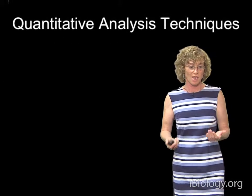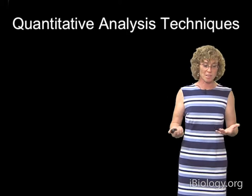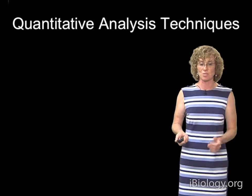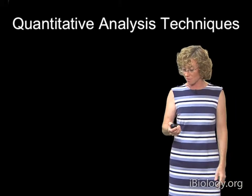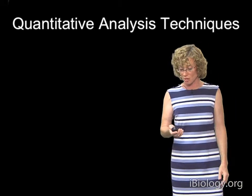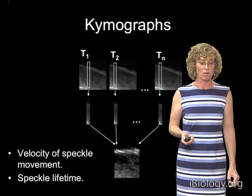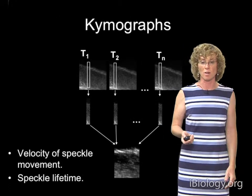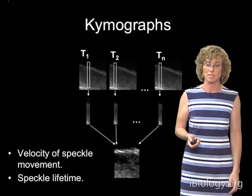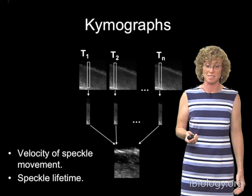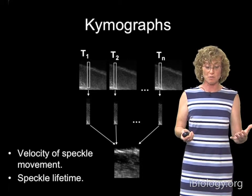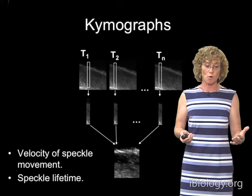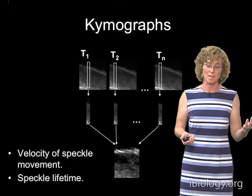You get these millions and millions of speckles in one speckle movie, and if you ask a graduate student to track them, they won't be around very long. So what you need are simple and also complex quantitative analysis techniques. The simplest quantitative analysis technique that just gives you a general feel for what's going on is a kymograph.